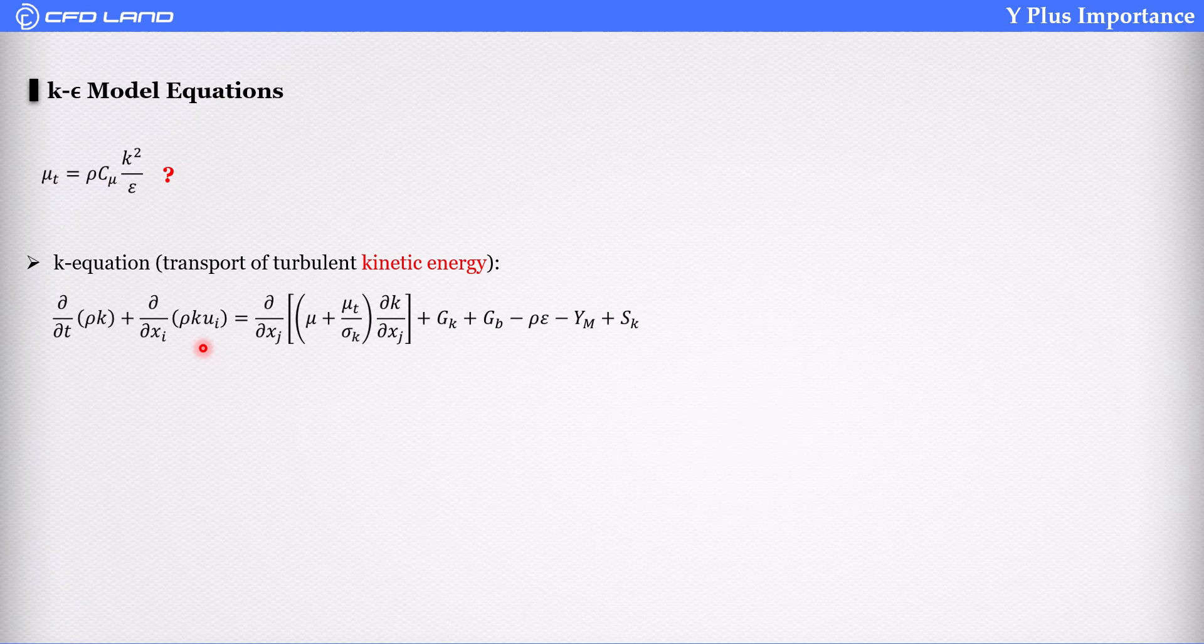We use transport equations to write equations for kinetic energy and dissipation energy. Know that for different types of k-epsilon model - RNG, realizable, and standard - k-equation is the same.